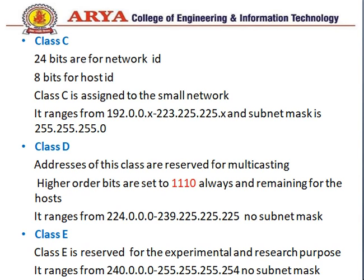Next we have Class C. In Class C, we have 24 bits for the network ID and 8 bits for the host ID. Class C is assigned to smaller networks and its range is from 192 to 223. Its subnet mask is 255.255.255.0.